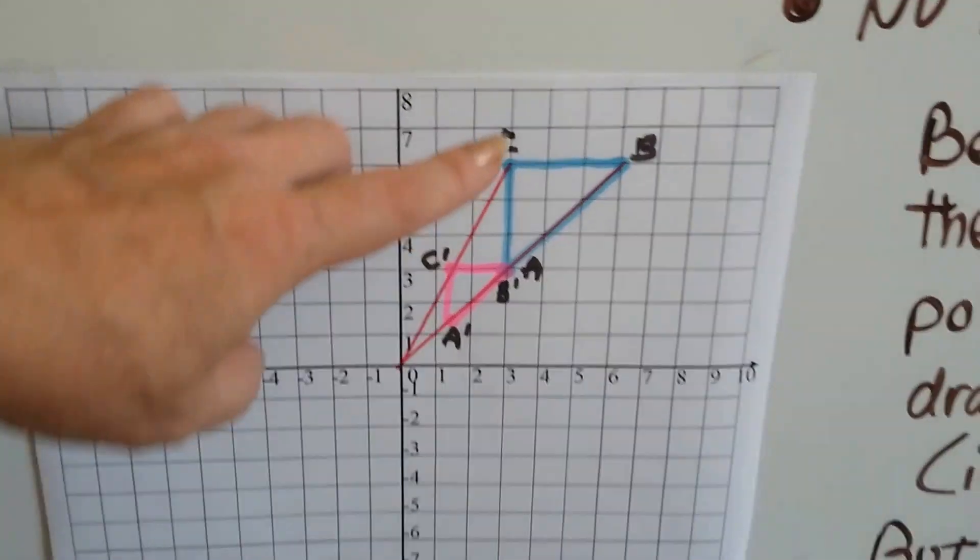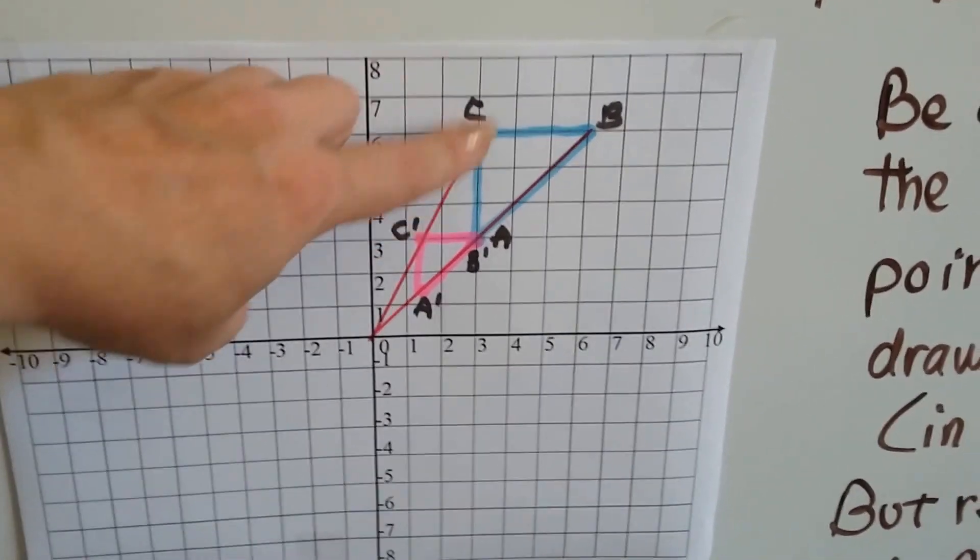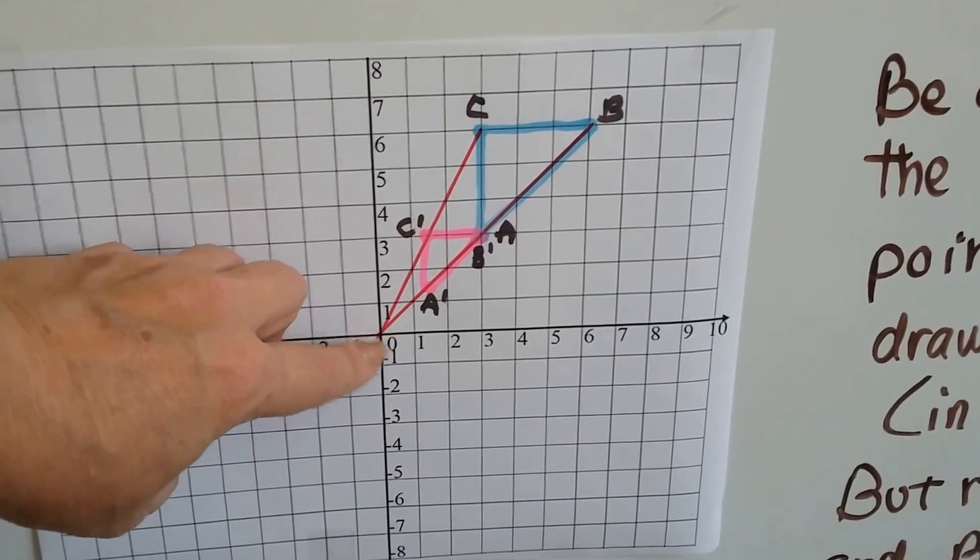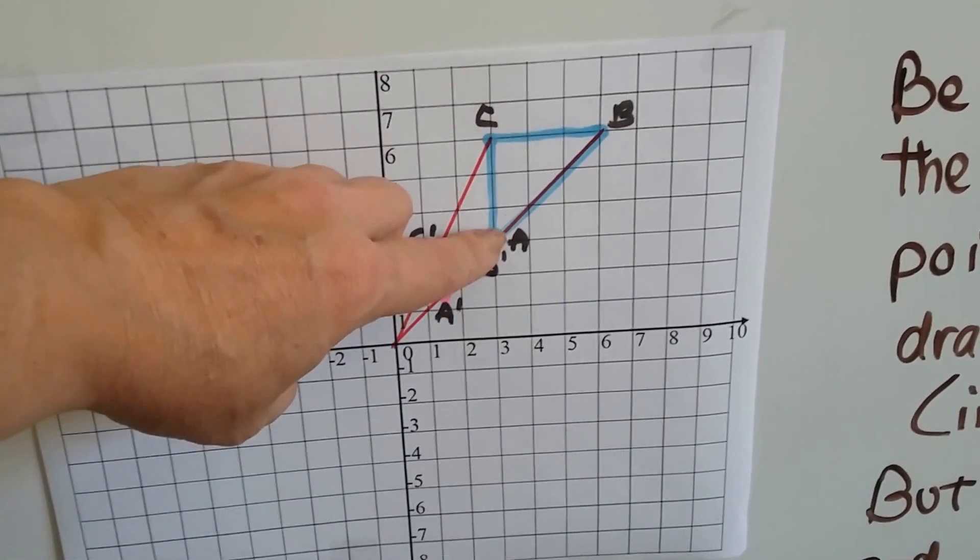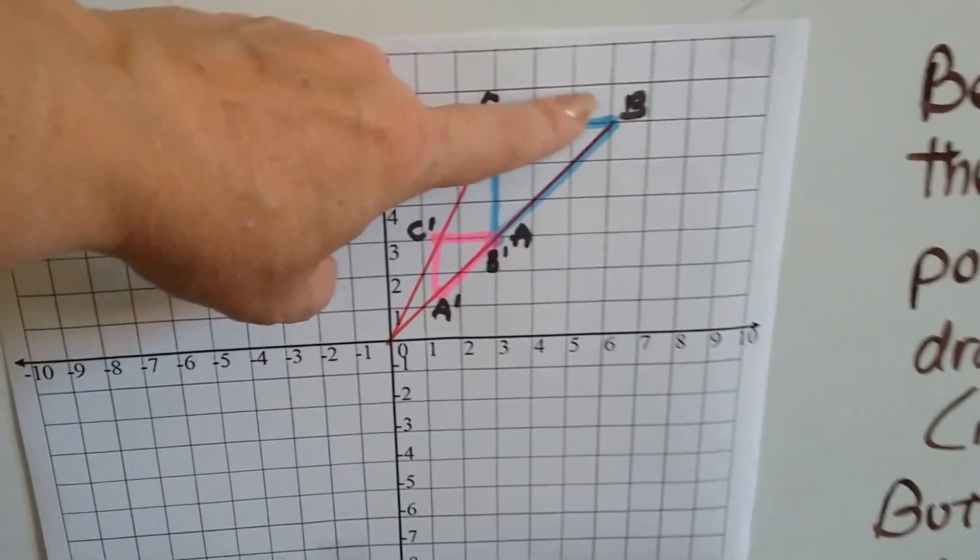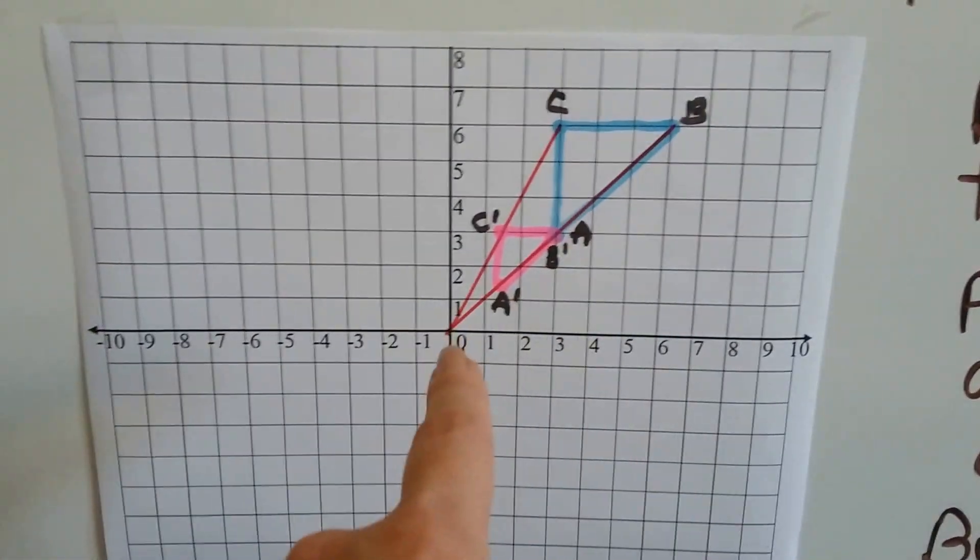When we draw the line to find the center of dilation, we draw it through C and C' and it goes to the origin. We draw it through A and A' and it goes to the origin. We draw it through B and B' but it kind of looks like it's the same line.